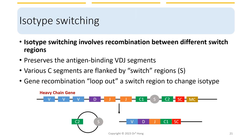Isotype switching also involves recombination between different switch regions, during which the antigen-binding VDJ segments are preserved. The genetic spaces between C genes are flanked by switch regions designated with an S. The gene recombination process eliminates some of the C gene variants, eventually transitioning from one antibody isotype to another.